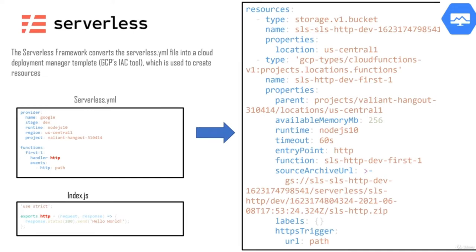Every serverless application will always consist of two files: the serverless.yaml file, which is the configuration file where your function and event will reside, and the JS file containing the code for your cloud function. The serverless.yaml file contains a provider — since we're using Google Cloud, the provider name will be Google.